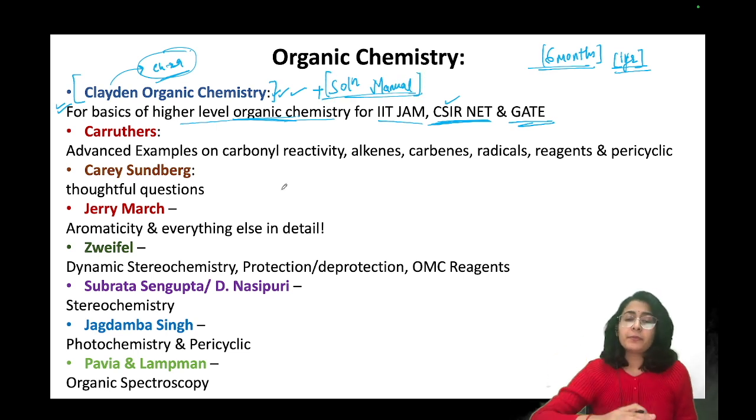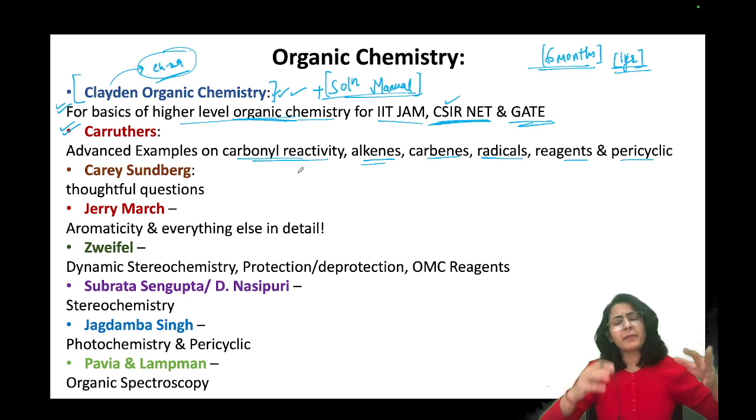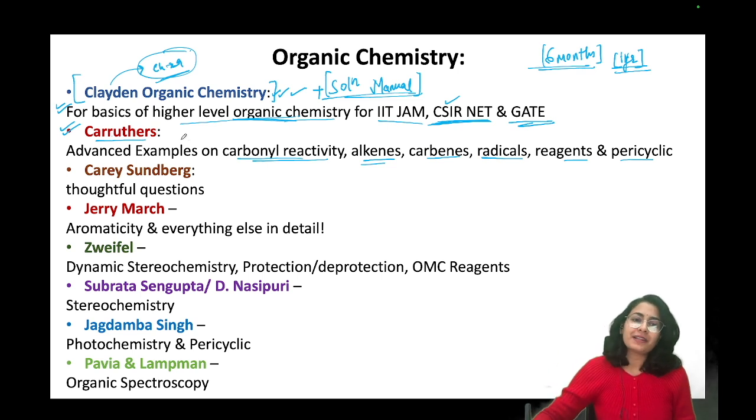Moving onwards to Carruthers. In Carruthers, there are advanced level examples. Most important ones are carbonyl reactivity, alkyl reactivity, carbenes, radicals, reagents, and pericyclic. All these topics are very important in Carruthers with advanced level examples. Many times, questions are asked directly from Carruthers. The examples from Carruthers become questions directly. You won't be able to understand the mechanism because the complete mechanism of the examples is not laid out. You have to understand it by yourself.